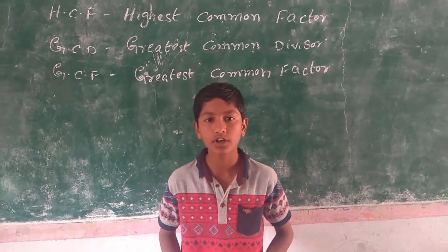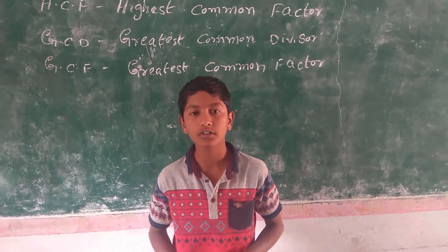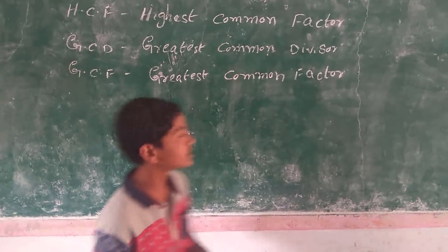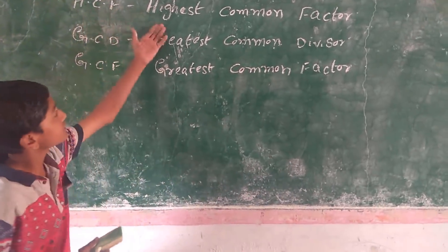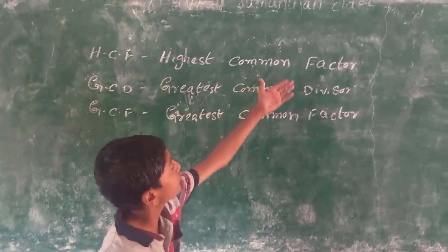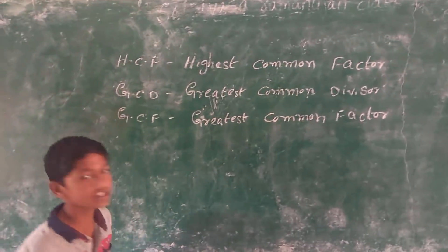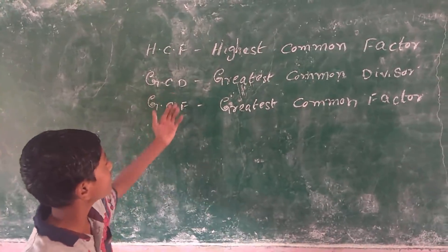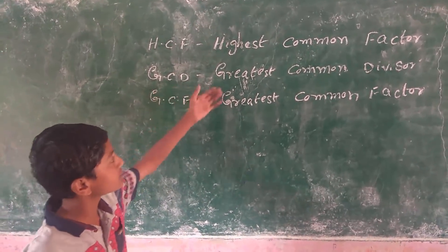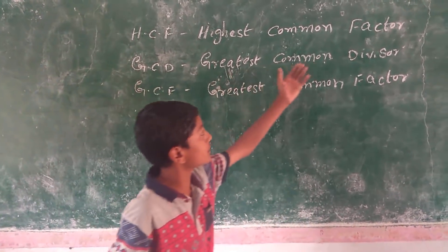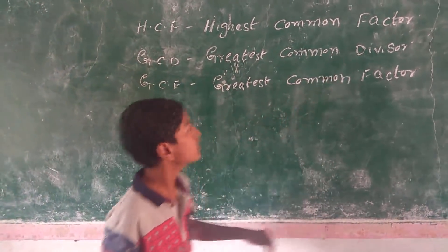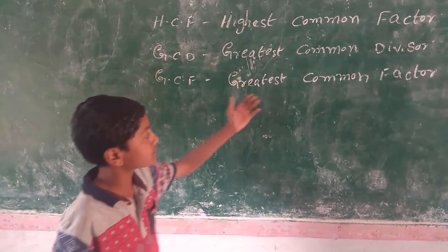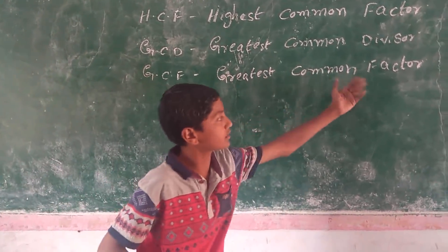Today we are going to discuss about HCF. HCF means Highest Common Factor. It is also known as GCD or GCF. GCD means Greatest Common Divisor, and GCF means Greatest Common Factor.